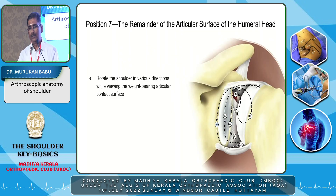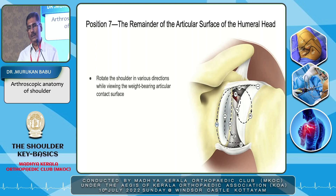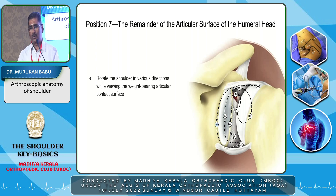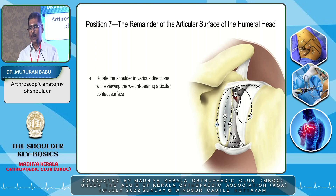Coming to the seventh position — the remaining part of the articular cartilage, that glistening articular cartilage. There are no major anatomical variations described in the humeral head as in the case of the glenoid. The only things you should look for are any pathological fraying or cartilage loss — but those are pathological findings that will be covered in diagnostic arthroscopy by the other speakers. In the seventh position, you see the articular cartilage of the humeral head.